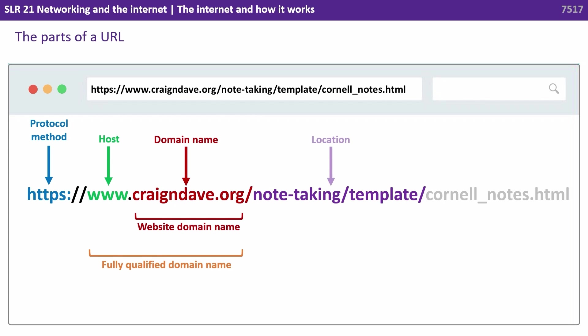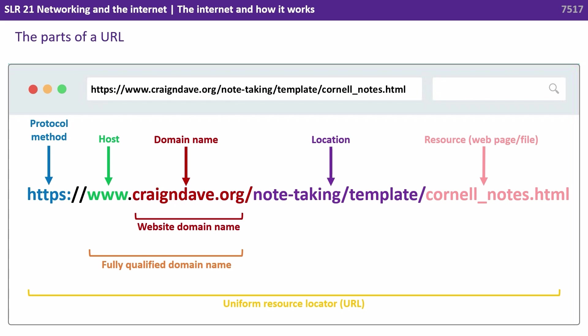We then have a location of where something exists within that domain. And finally, we have the resource we're locating, which could be a web page or a file. The entire URL, from start to finish, is called the Uniform Resource Locator, or URL.